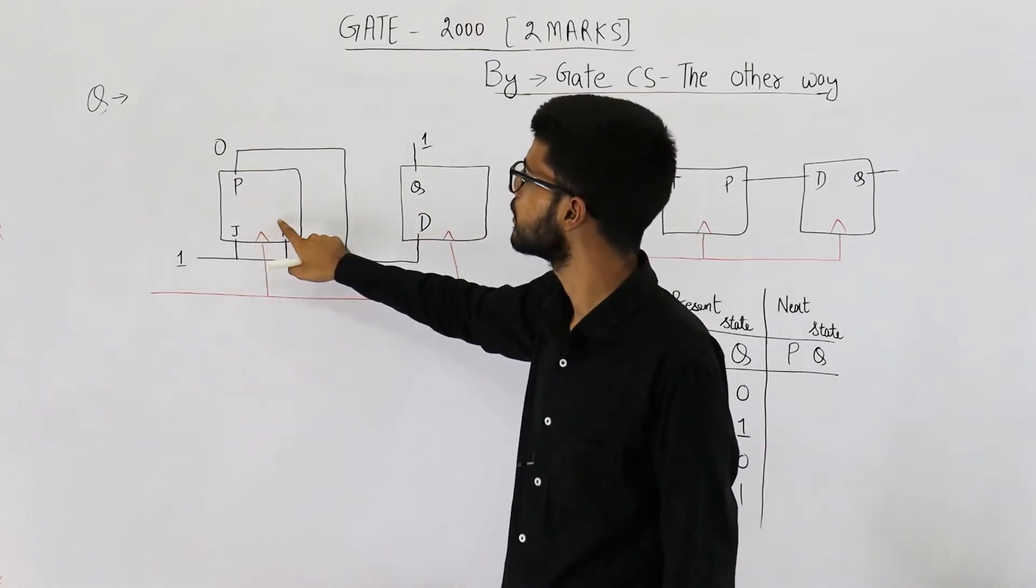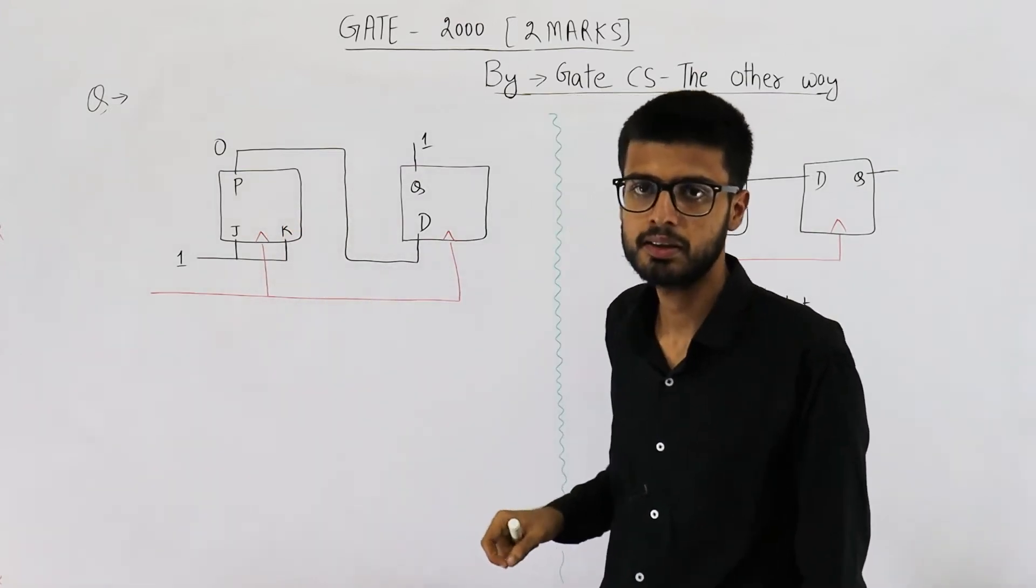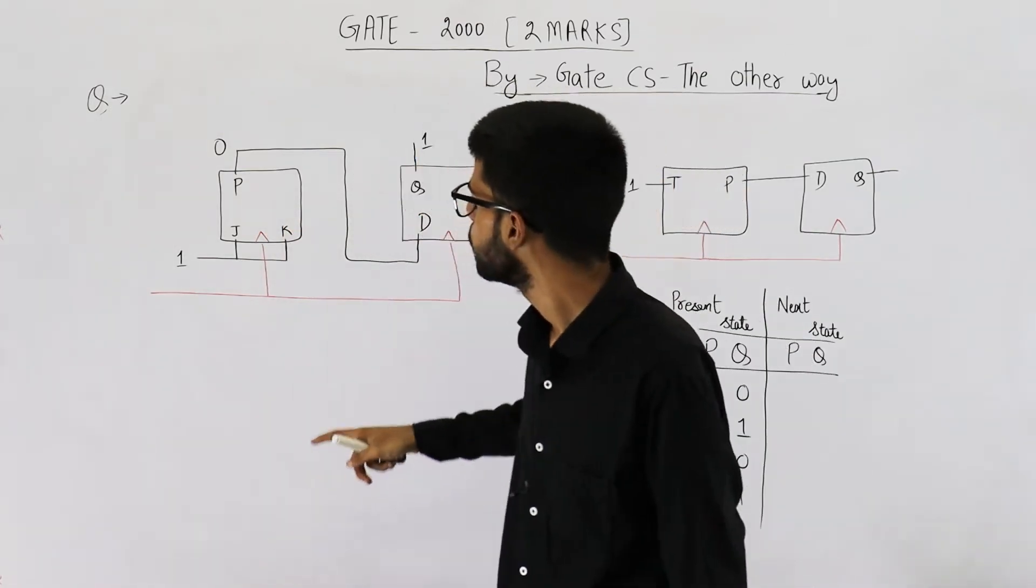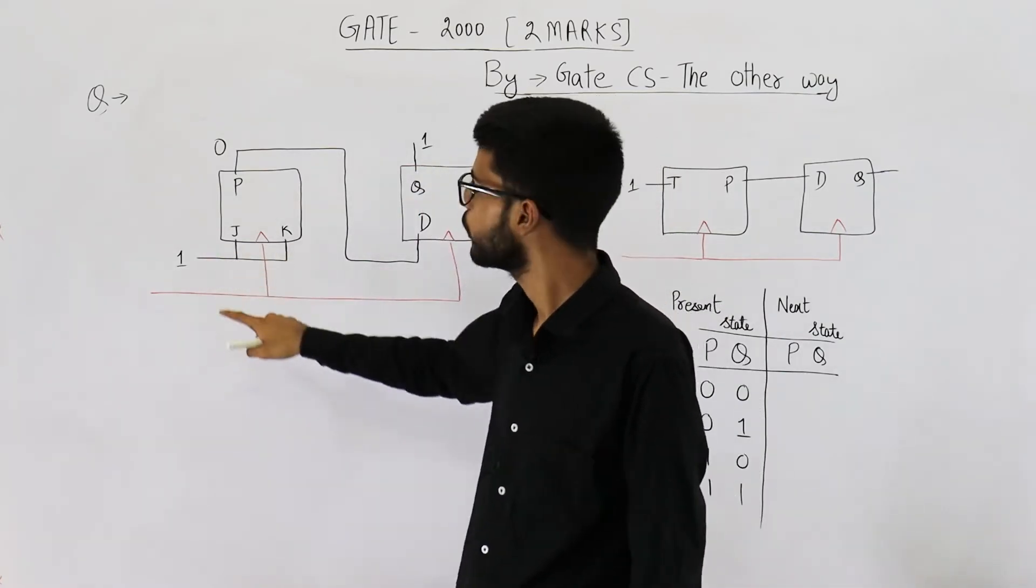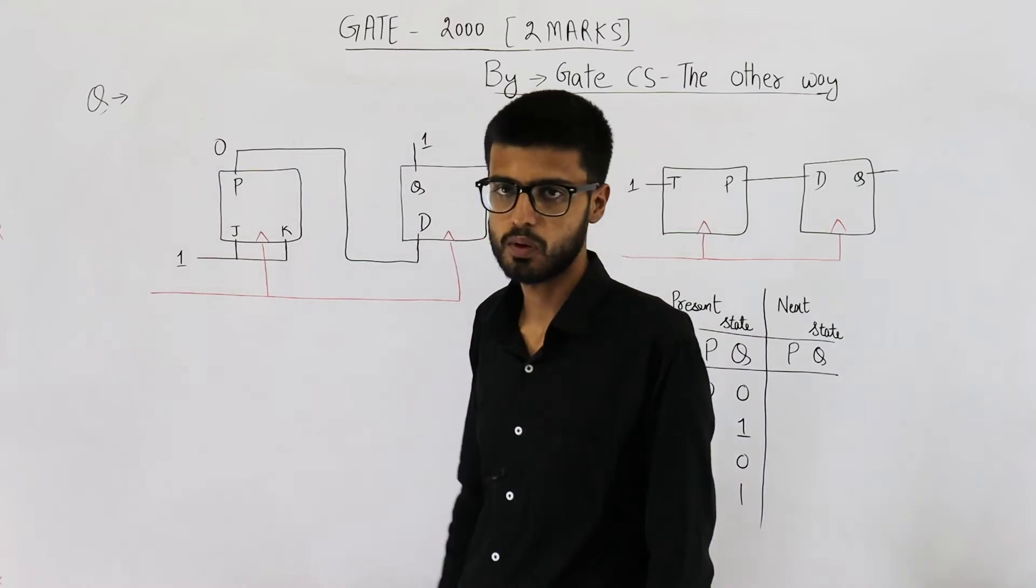Also you can see this is a JK flip-flop but this will act as a T flip-flop because both J and K are connected to each other. So this one will act as a T flip-flop with T input is equal to one.